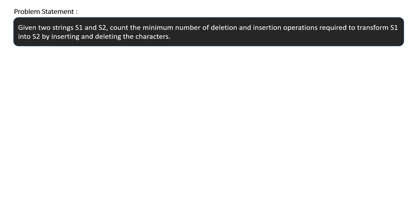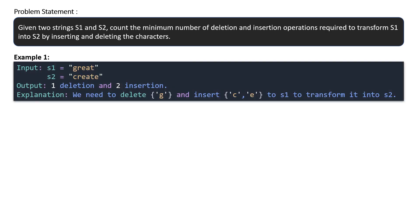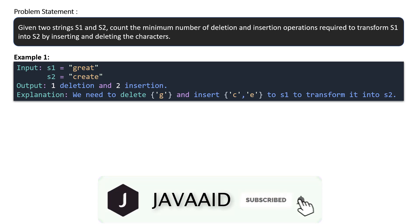Given two strings S1 and S2, count the minimum number of deletion and insertion operations required to transform S1 into S2. In example 1, S1 equals 'great' and S2 equals 'create'. The output will be one deletion and two insertions — we need to delete G from S1 and insert C and E to transform it into S2.